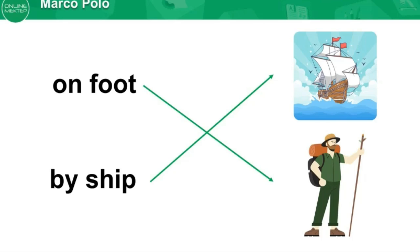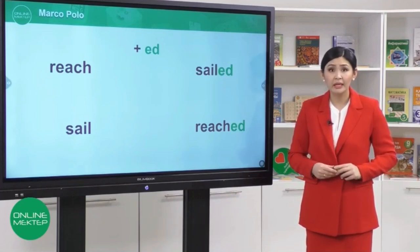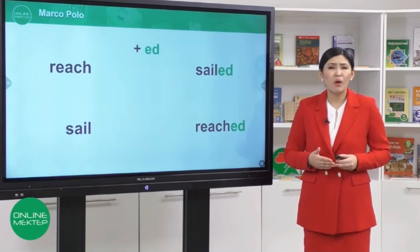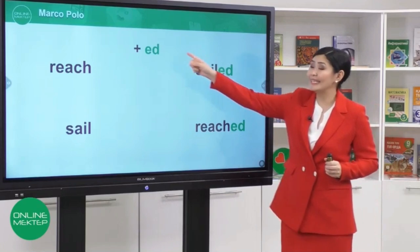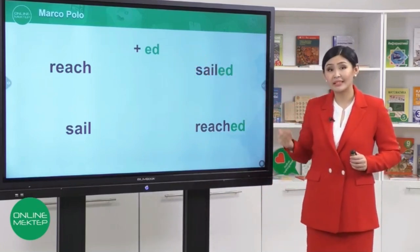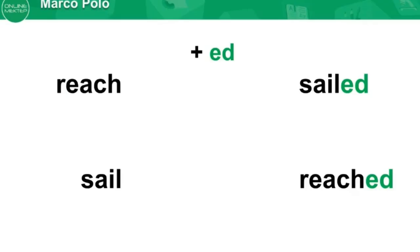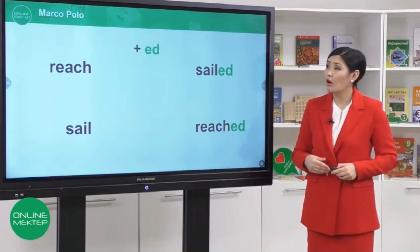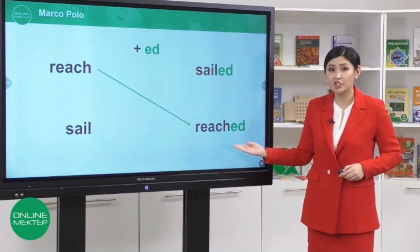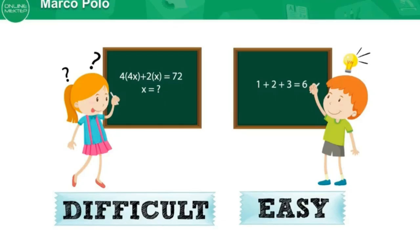Now let's quickly revise the past tense. Remember, if you want to describe an event that was a long long time ago, add -ed to the verb. Now read the words and match. Beautiful job — the past tense form of the verb 'reach' is 'reached' and 'sail' is 'sailed'.